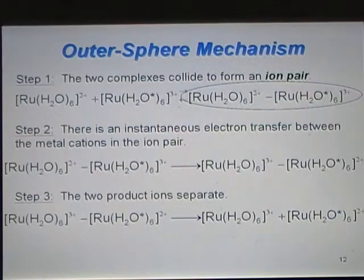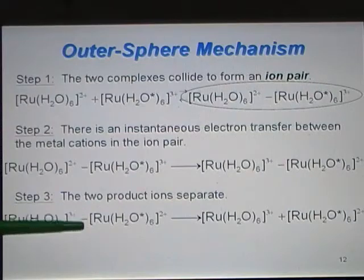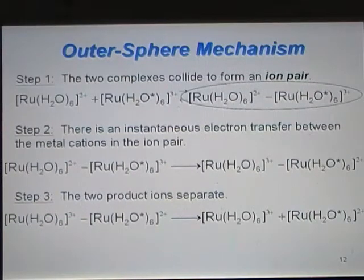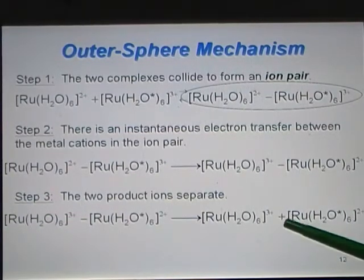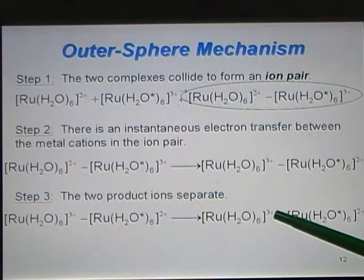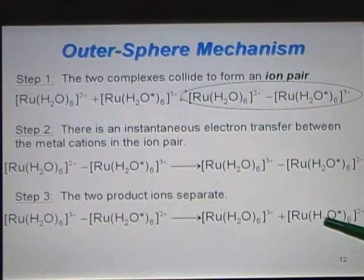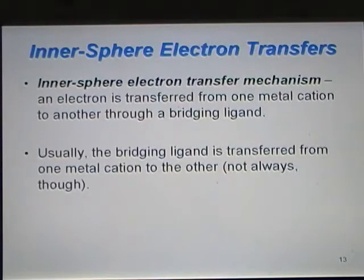In the third step, the two product ions separate. That weak bond is broken, forming two products, Ru H2O6 3+ and Ru H2O star 6 2+. That is the mechanism for an outer sphere reaction.